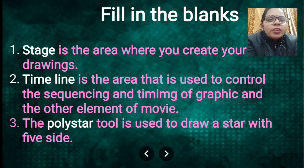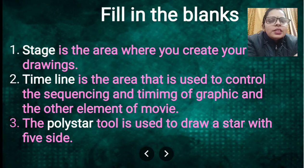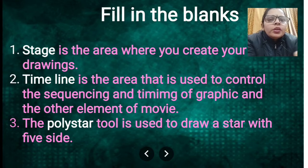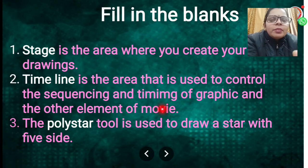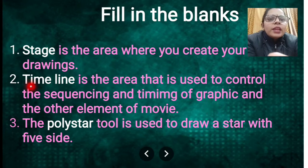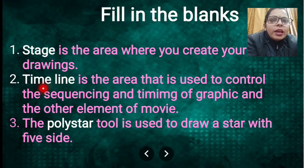First fill in the blank: the blank is the area where you create your drawing. That area is the Stage in Animate CC — it is the working area where we can write or make anything. Next: the blank is the area used to control the sequencing and timing of graphics and other elements of a movie. The answer is Timeline — in the Timeline we can control our video.